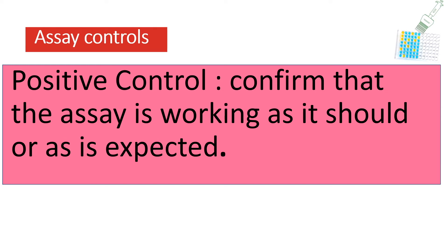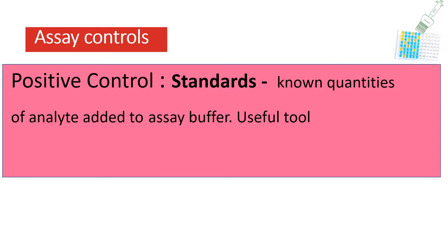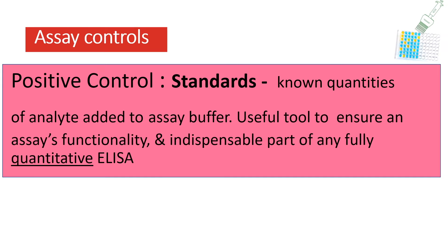Positive controls confirm that the assay is working as expected. When measuring a particular analyte, you find a situation where you know the analyte is present and use that in a couple of wells to track that the response is as expected. Standards are not typically thought of as a positive control, but since they contain known quantities of the analyte added to the buffer, they are probably the purest form of a positive control. So while standards are their own category, they can be viewed as a positive control — and it is also commonplace to include a dedicated positive control well.